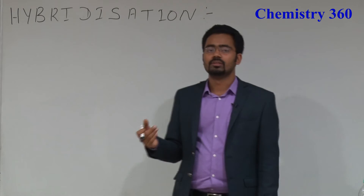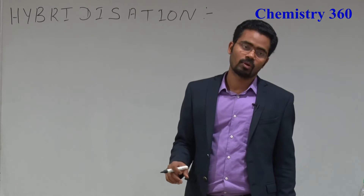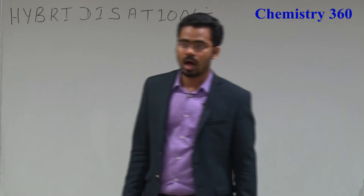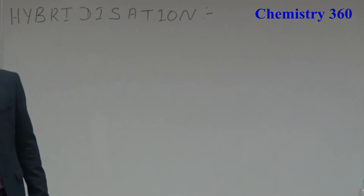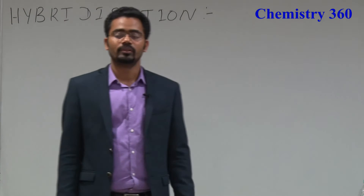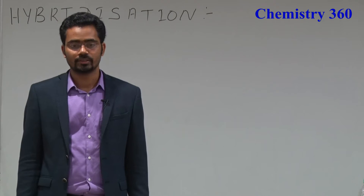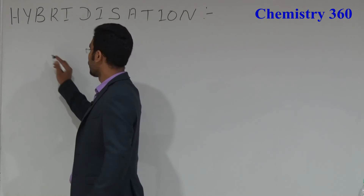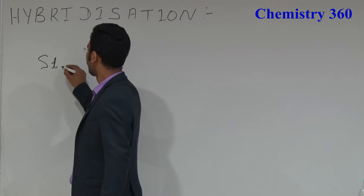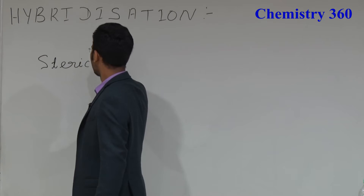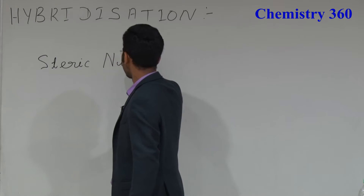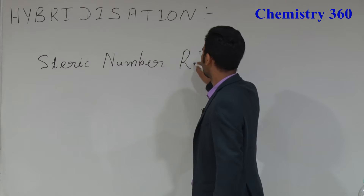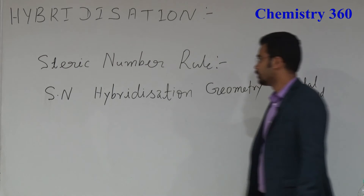Now, how to calculate hybridization? This is important — the determination of hybridization of an atom in a molecule or in an ion. For this, one term is used called the steric number. This is called the steric number rule.